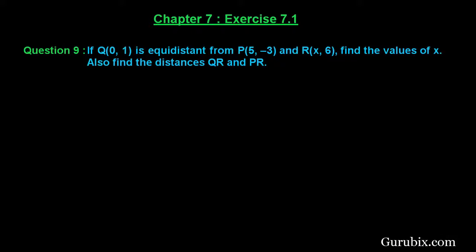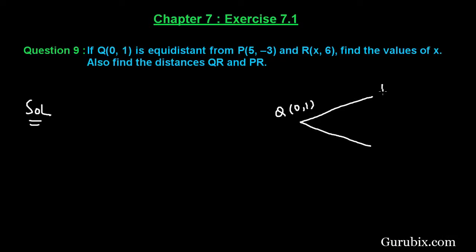Let us solve the question. First of all, let us draw a rough sketch of the given points. Suppose this is point Q whose coordinates are (0, 1), here is point P whose coordinates are (5, -3), and here is point R whose coordinates are (x, 6). We are given that Q is equidistant from points P and R.